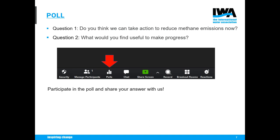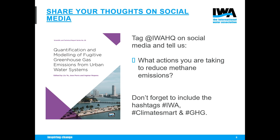Before we start, there will be a poll with two questions. The results show that almost everyone — 99% of participants — say yes, we can take action to reduce methane emissions now. The second question asked what would be useful to make progress. The most popular answers were: tools to better estimate emissions, and experience with monitoring methods. Thank you for participating.